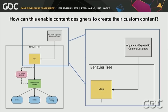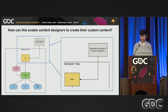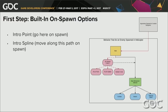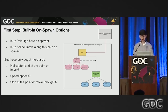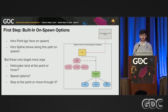So jumping back to our abstracted view — how can we keep things systemic while still allowing content designers to create custom content? The very first thing we tried were built-in on-spawn behaviors: give a character a point and they'd run there on spawn, or give them a path and they'd move along it. But as soon as we baked in those options, content designers started asking for more — we immediately faced argument creep. For a helicopter, should they land at the point or hover above it? At what speed should they move along the path? Do I want them to stop at the point or move through it? It's hard to build in any custom on-spawn behaviors with only one or two simple arguments.